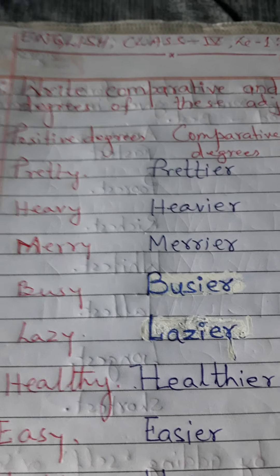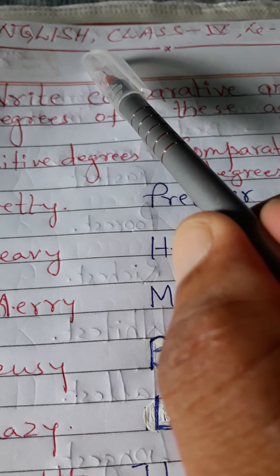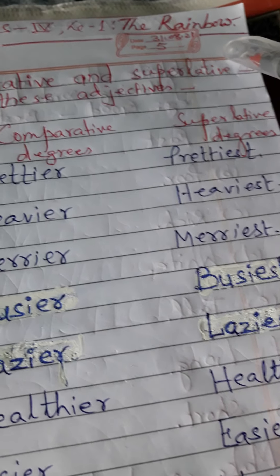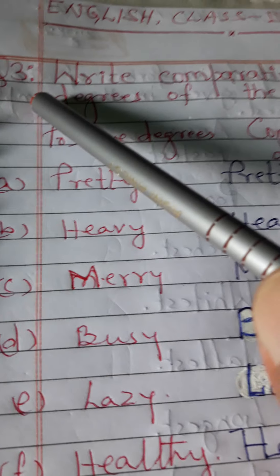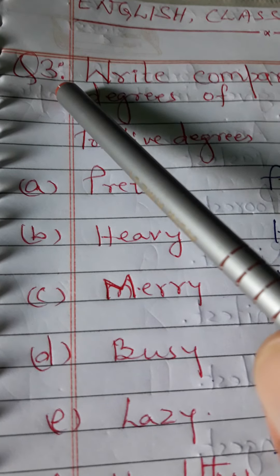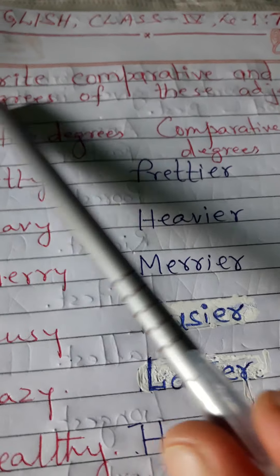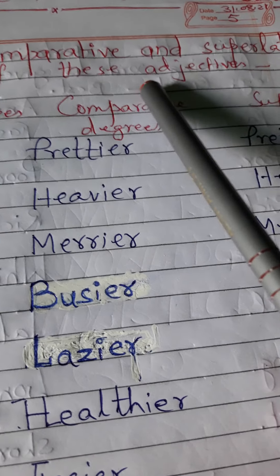Welcome back to English class. Today we have to go through the English book belonging to Class 4, Lesson 1 — 'The Rainbow.' This is a question and answer session. We must go through Question Number 3: write comparative and superlative degrees of the given adjectives.